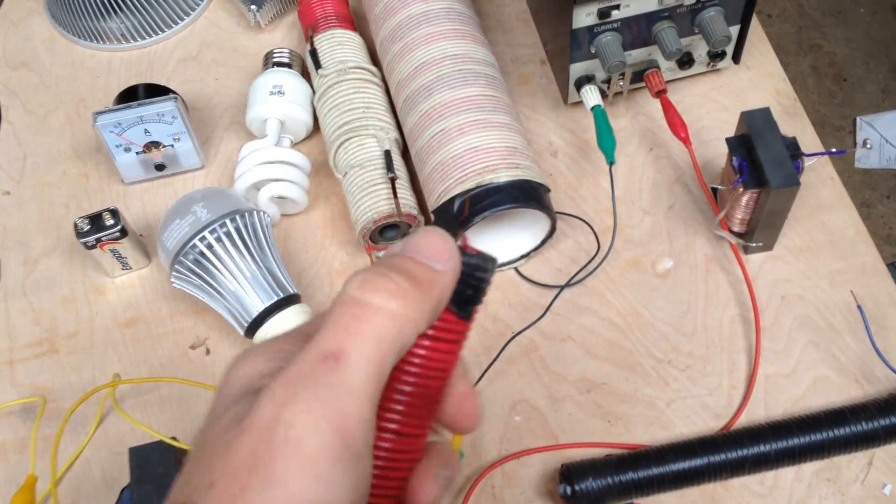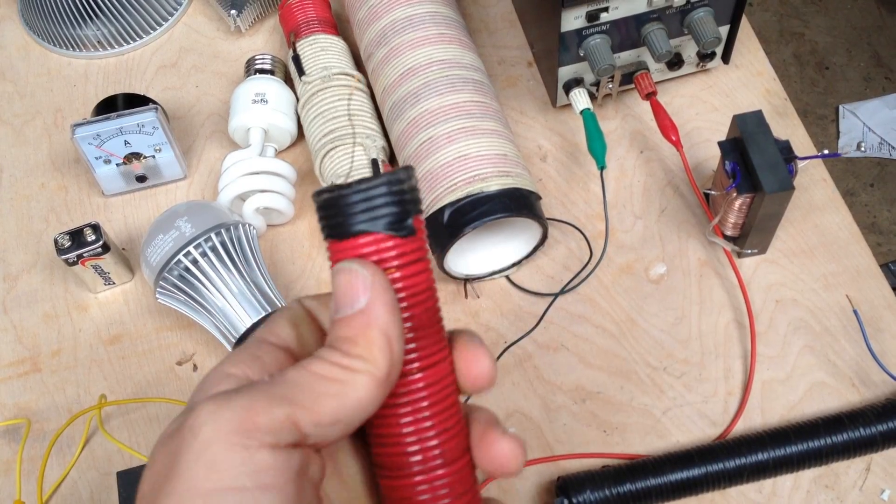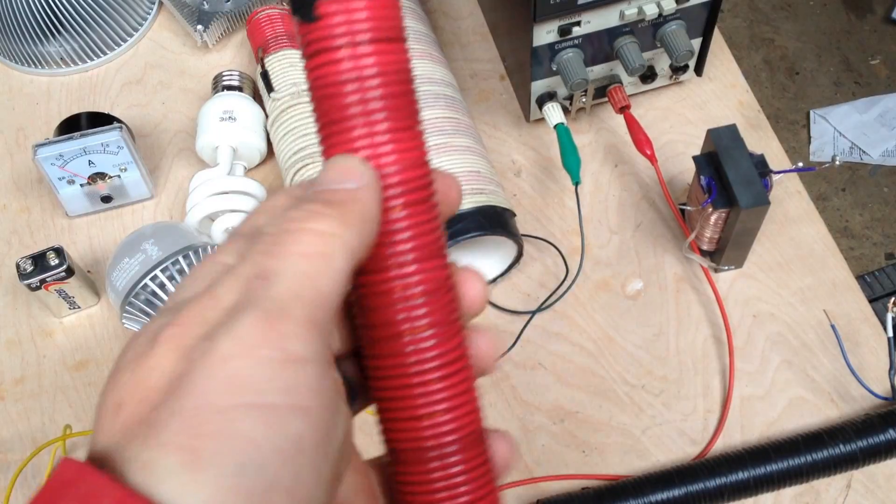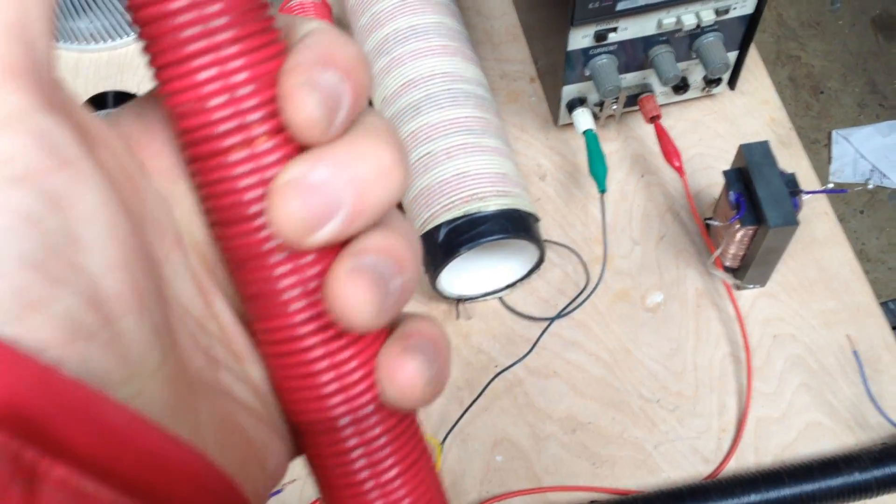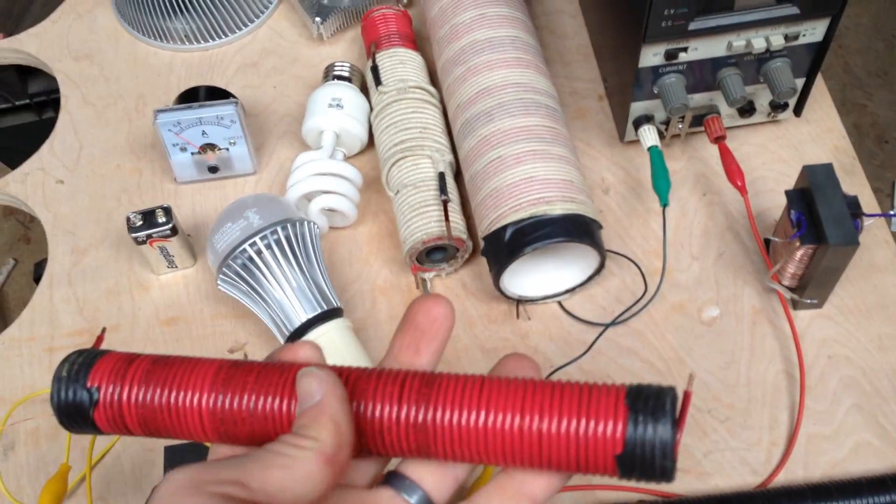These coils are really straightforward. You just take, in this case, it looks like I have about a 20 gauge enamel copper wire here. I wound the full length of this ferrite rod, came back over it with what looks to be a 14 gauge wire, but a lot of these variables you can adjust.